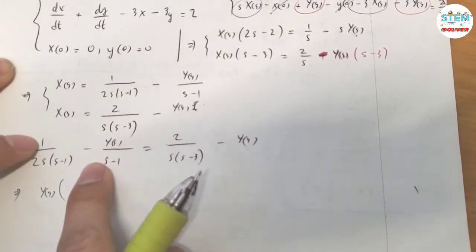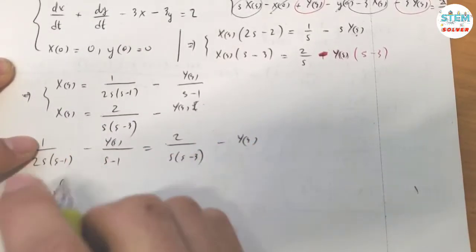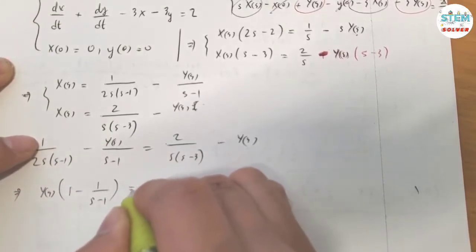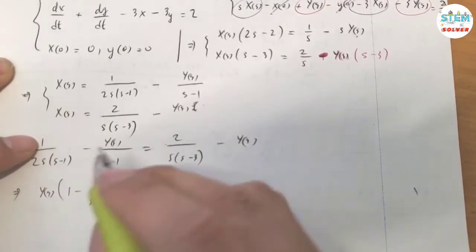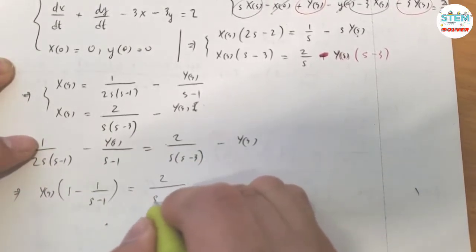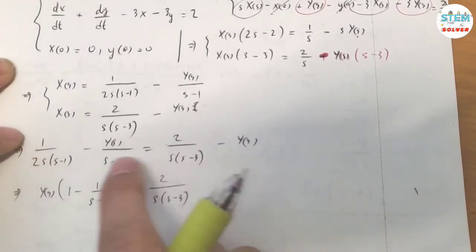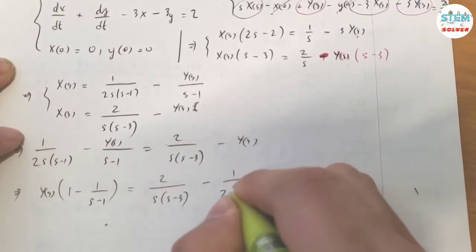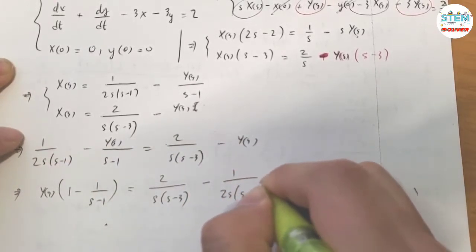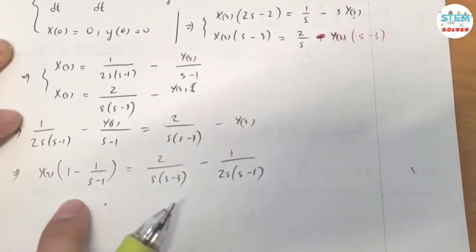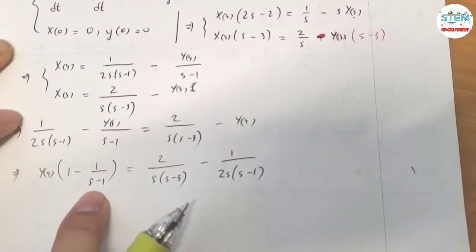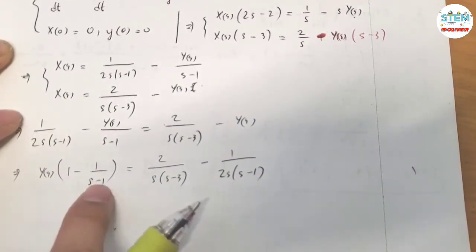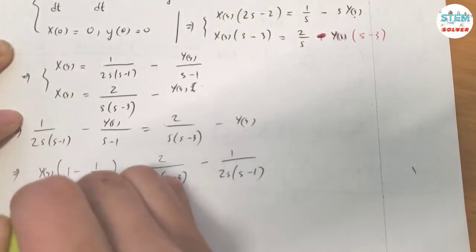Moving terms around, we get one minus one over (S minus 1) on one side. Then multiply both sides by (S minus 1) to clear the fractions.